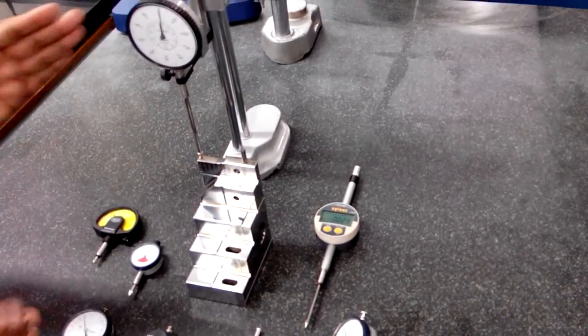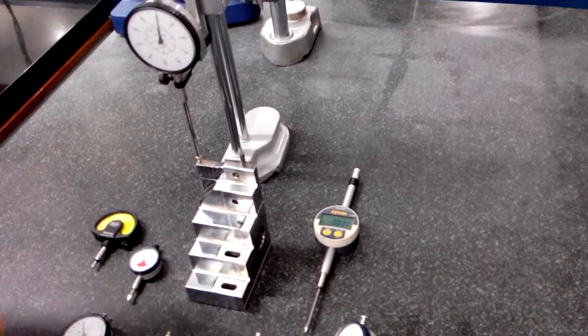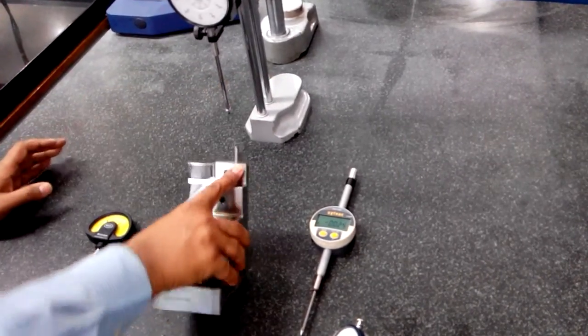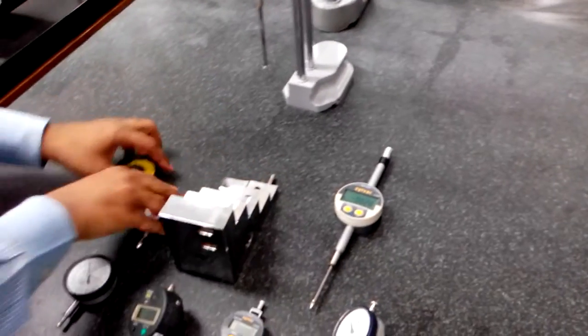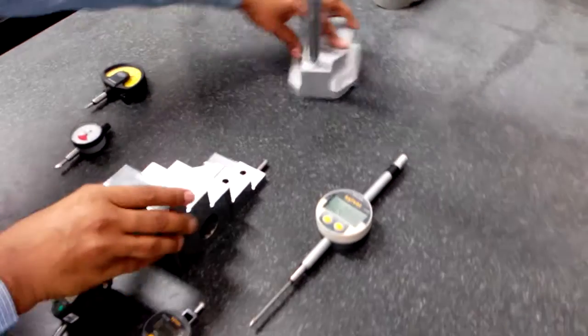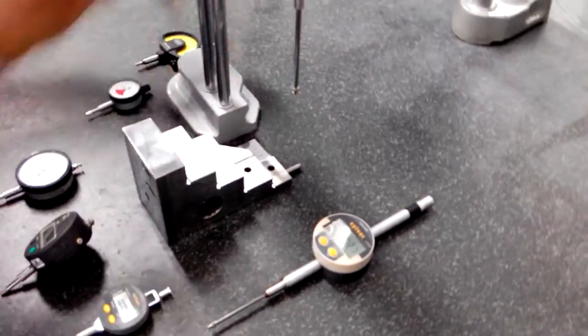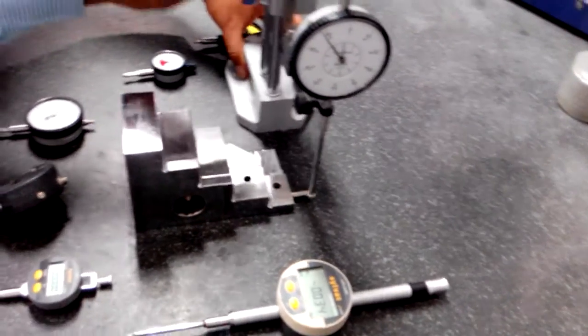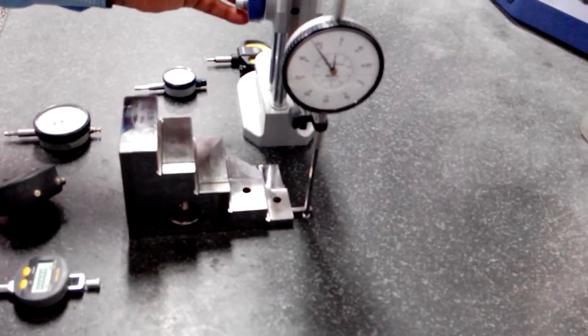Now if you want to calibrate in big steps, you can do it that way. First, put quick check like this way, rotate your dial, make it zero on the surface plate.